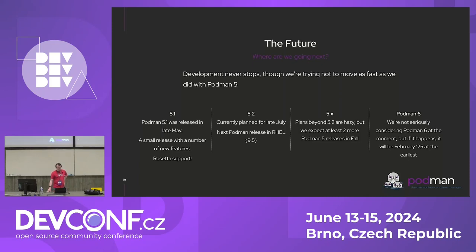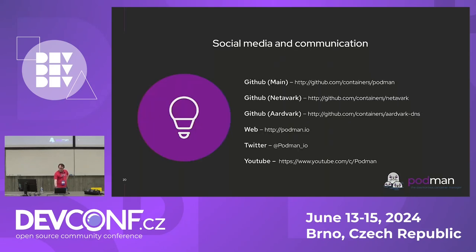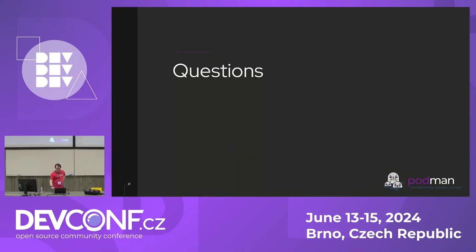Where do we see ourselves going next? Podman 5.1 was released in late May — it's out now, a small release with new features including Rosetta support, which didn't quite make 5.0. Podman 5.2 is currently planned for late July, and we're hoping to do at least two more releases this year in the fall. As for Podman 6 — we're not committing to a timeline, but I'll make this guarantee: it will be at least next year. We do not do major version bumps at anything less than a 12-month cadence, because breaking changes should not come that often.